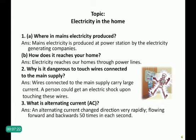Wires connected to the mains supply carry a large current. A person could get an electric shock upon touching this wire. Question 3: What is alternating current? DC is direct current, whereas AC changes direction rapidly — flowing forward and backward 50 times each second.